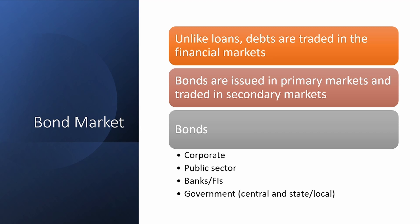The bond market is part of the credit market but differs from the loan market. The loan market is not directly traded in financial markets, whereas bonds — also known as debt instruments — are traded in the financial market, also called the debt market. Bonds are issued in primary markets and then traded in secondary markets, but there is no secondary market for loans.